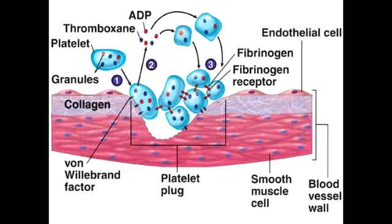In this picture, you can also see arachidonic acid which is converted to thromboxane A2 by the enzyme COX, which stands for cyclooxygenase. Thromboxane A2 is a pro-aggregation factor. You can also see the anti-aggregation factors inside the endothelial cells, such as thromboplastin, TPA, and PGI2.